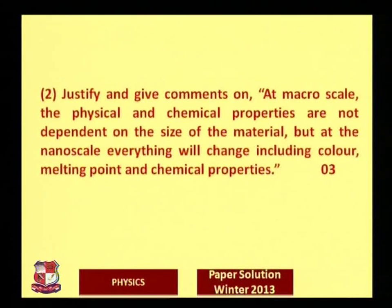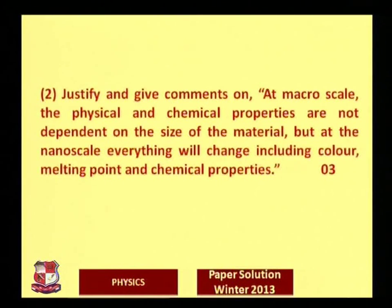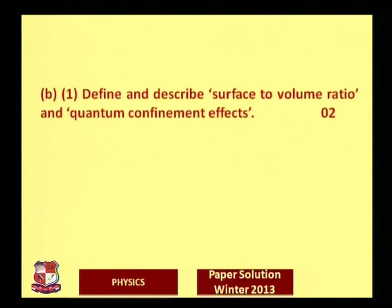The next question asks to justify: at the macro scale, physical and chemical properties are not dependent on the size of the material, but at the nano scale everything changes — including color, melting point, and chemical properties. At the macro scale, properties depend on the material's reactions rather than its size. At nano scale, one dimension is almost zero, which changes how the material interacts with its surroundings, thereby changing color, melting point, and chemical properties.